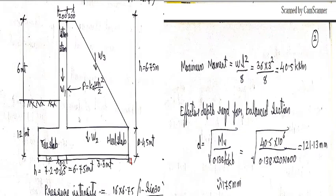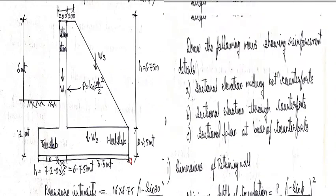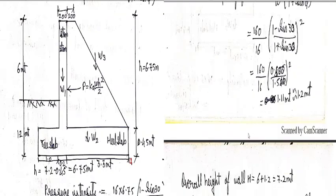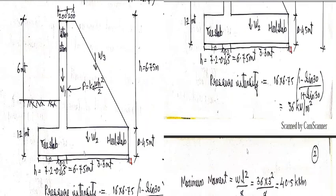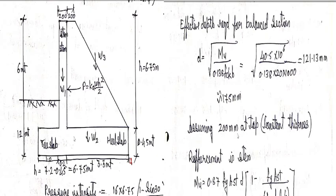So the effective depth required for the balance section is D is equal to root of MU divided by 0.138 FCK B. So 40.5 into 10 raised to 6 divided by 0.138 into 20 into 1000 which is 121.13 mm. Now here 0.138 FCK B, 0.138 is because due to the grade of concrete. So the grade of concrete here you can see is M20. So for M20 and FY 415 the formula will be 0.138.